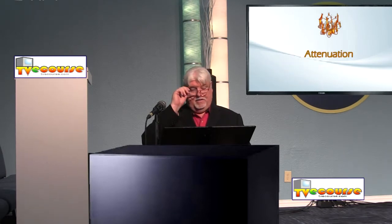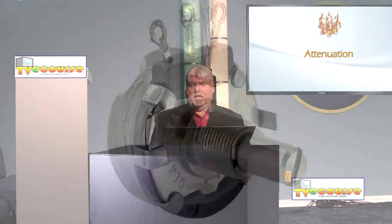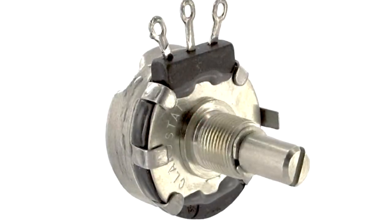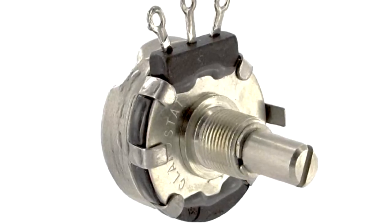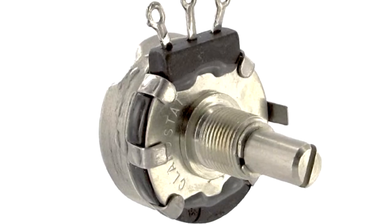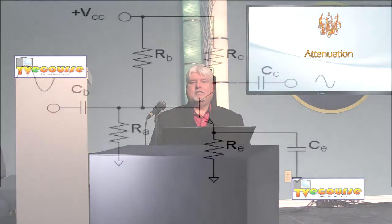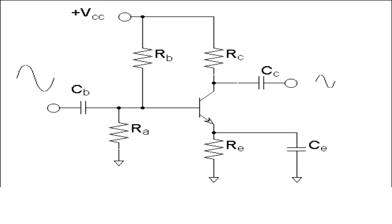The next topic in broadcast engineering is attenuation. Attenuation is the decreasing of a signal. You can do this mechanically by using a potentiometer or some device that puts a resistance across the signal, reducing the amount of the signal. You can do it electronically with transistors and amplifiers that provide less gain than the incoming signal, and thereby the signal is attenuated.